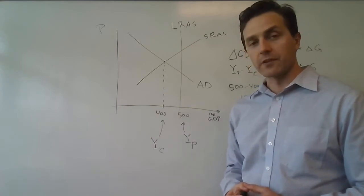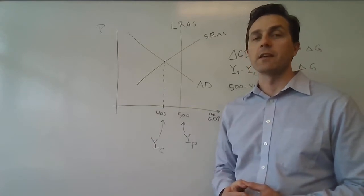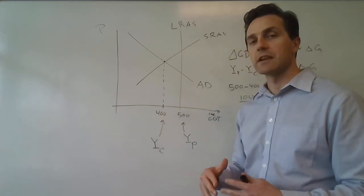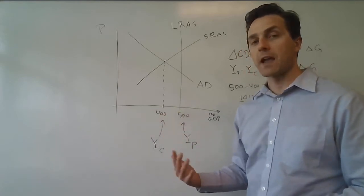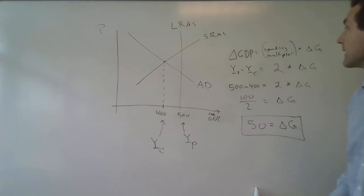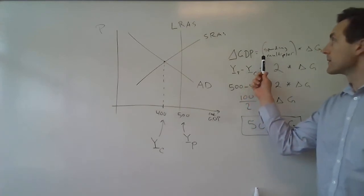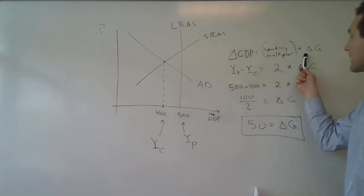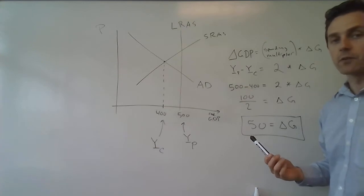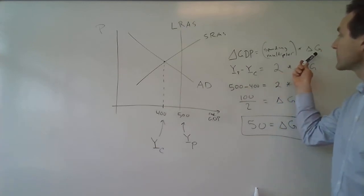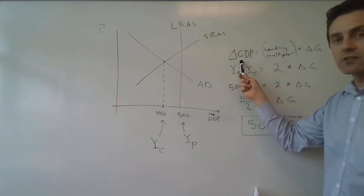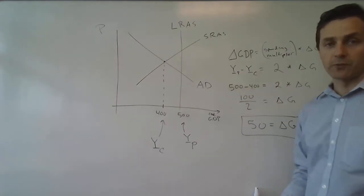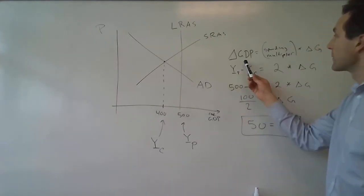Now, when there's a spending multiplier, and the multiplier is greater than one, the government doesn't have to increase spending by the size of the gap, but rather some fraction of it. By definition, the spending multiplier is such that when there's a change in government spending — delta G — you multiply that amount by the spending multiplier, and that tells you the change in total spending. The change in total spending is equal to the change in GDP, because GDP equals total spending.